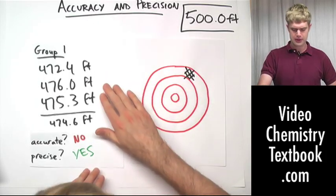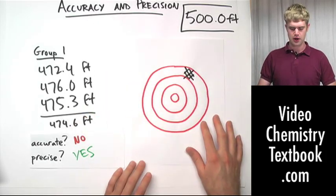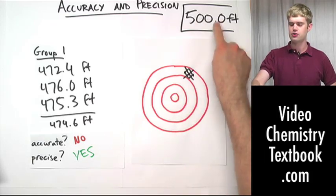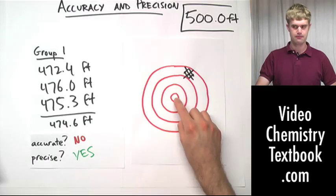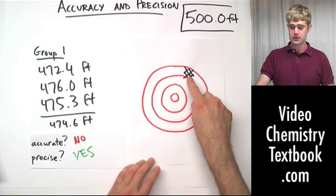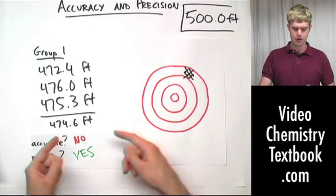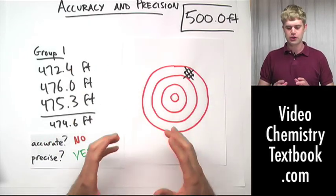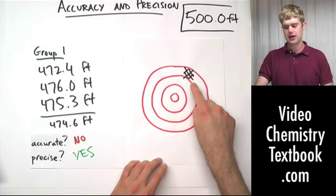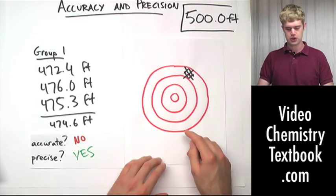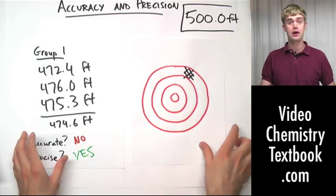We can symbolize their measurements using this bullseye target here. Accuracy, again, if they hit the bullseye, it means they get 500.0 feet right on the nose. They didn't get that. Instead, they were off from the target, because their average came around 474. But precise, yeah, all their measurements were very close together. So the hits on the target board, although away from the center, are grouped together to show that it's not accurate, but it is precise.